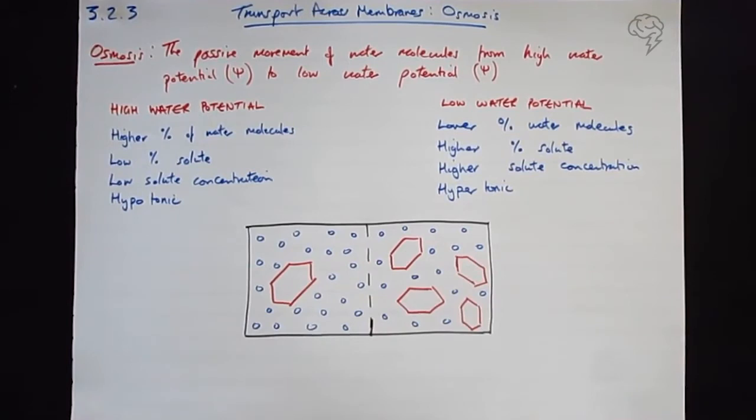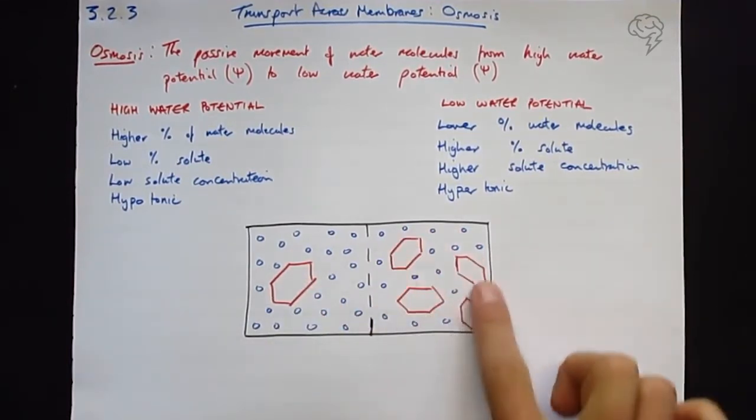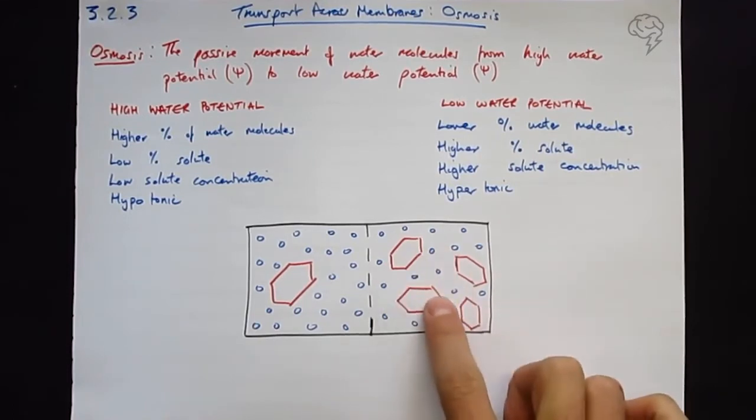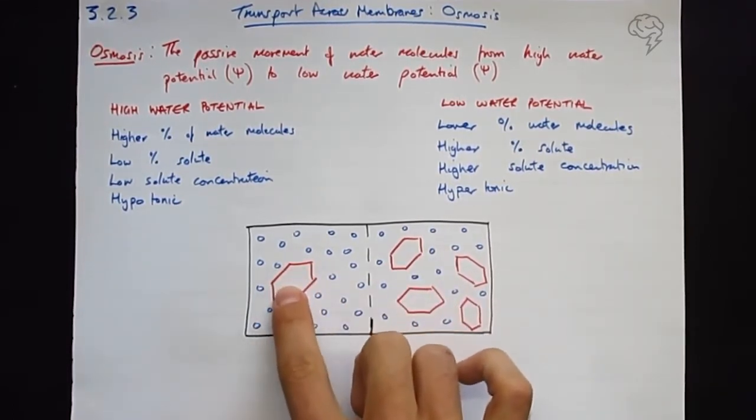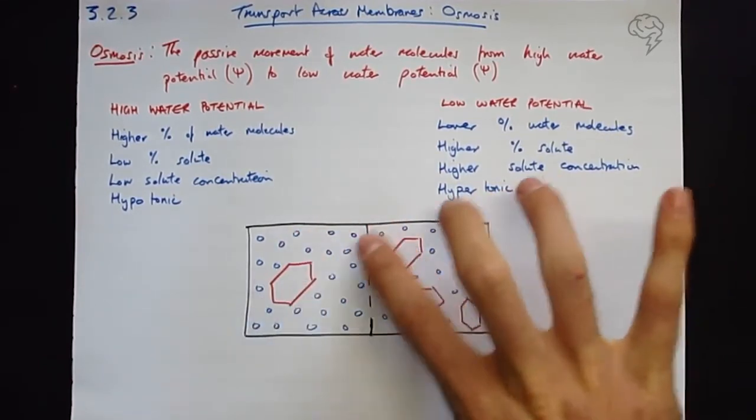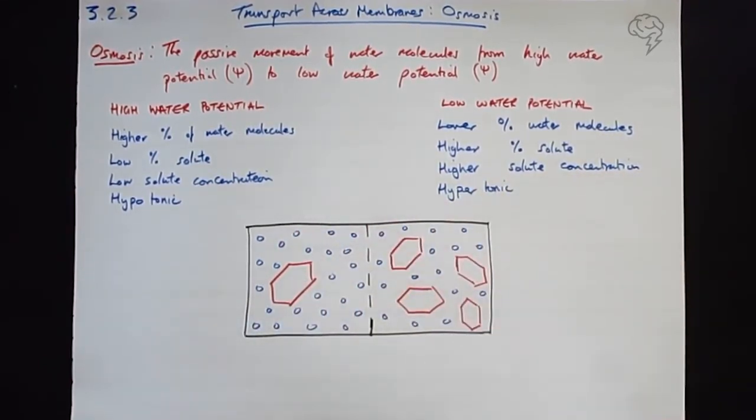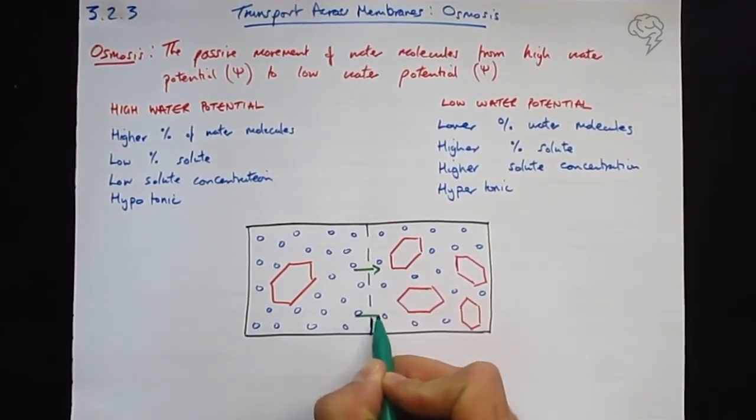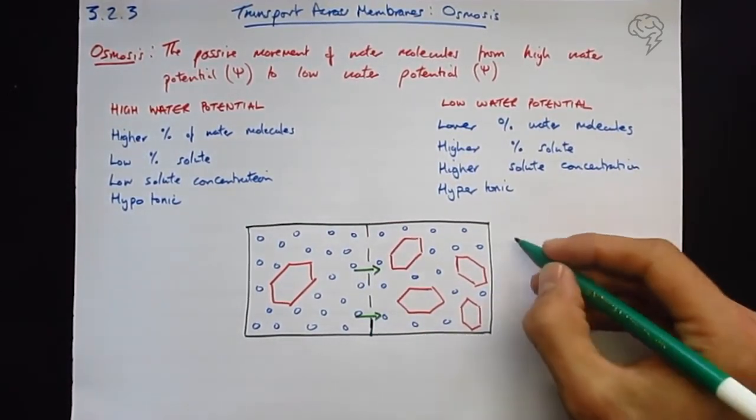But if you look at this without thinking about it, you think, oh I can see these things, these are the big shiny red things, there's more here and there's less here. And students make the mistake of thinking, oh draw an arrow which way water moves, it goes from high concentration to low concentration. Well that's not right because you're doing high concentration of solute to low concentration of solute.